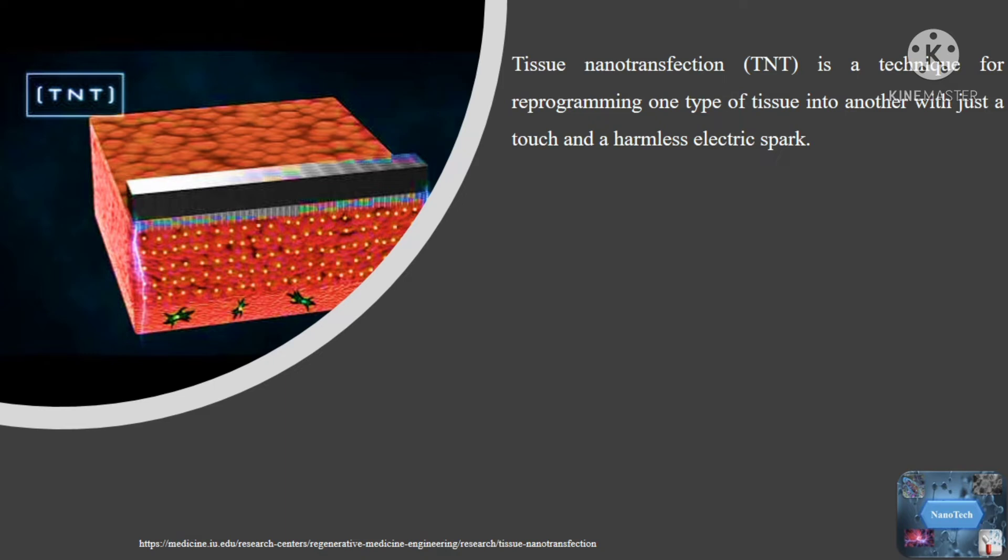There are two primary components to the technology. To begin, a nanotechnology-based chip is being developed to deliver cargo to adult cells in the living body. Second, the design of specialized biological cargo for cell conversion permits such cargo to convert an adult cell from one type to another of interest when delivered utilizing the above technology.